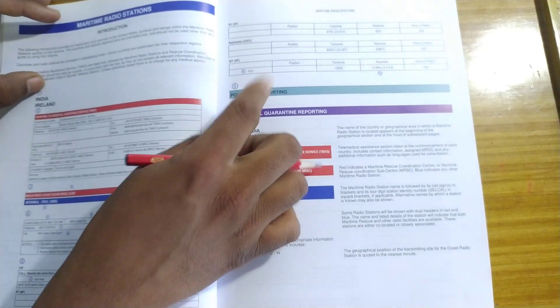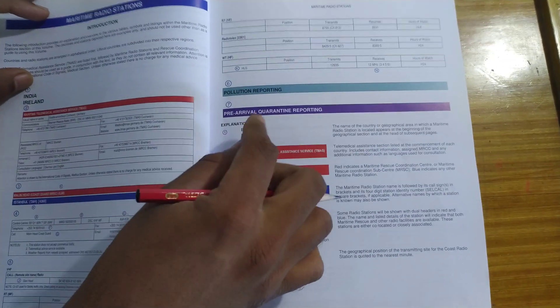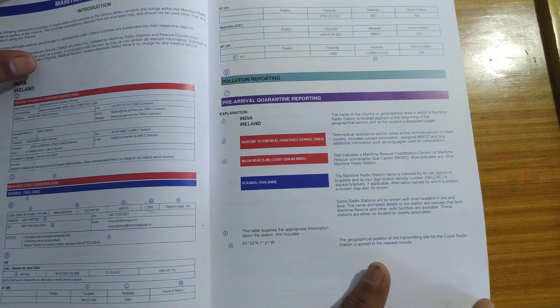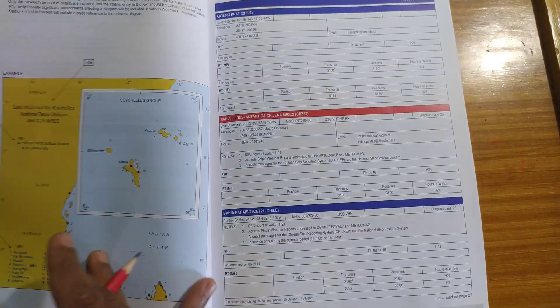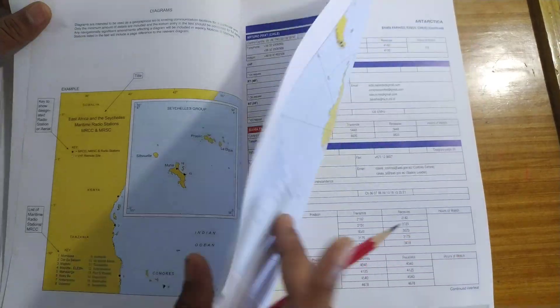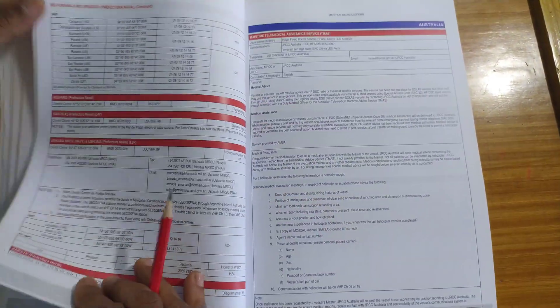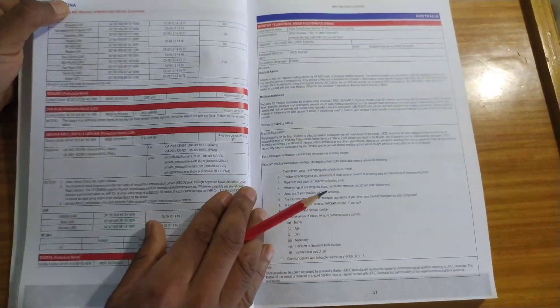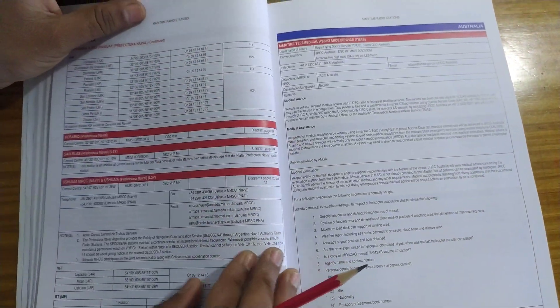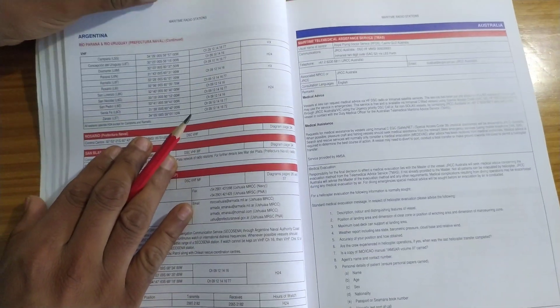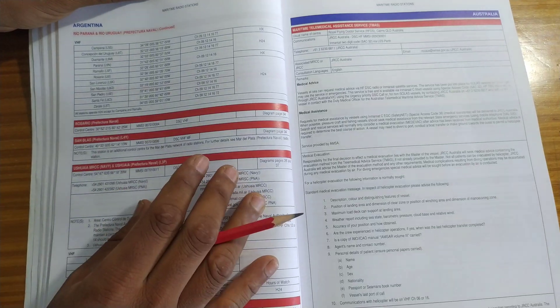Next comes pollution reporting and then the pre-arrival quarantine reporting. I will show you an example. The best example last time when I went through the book is Australia. Remember, this book has all the countries named in alphabetical order.